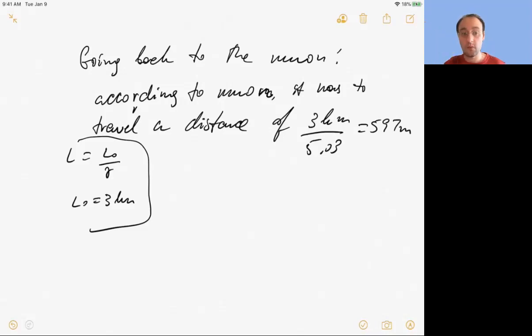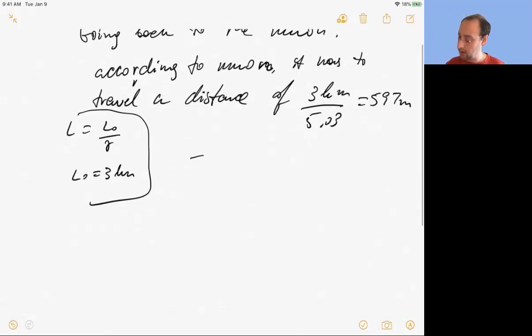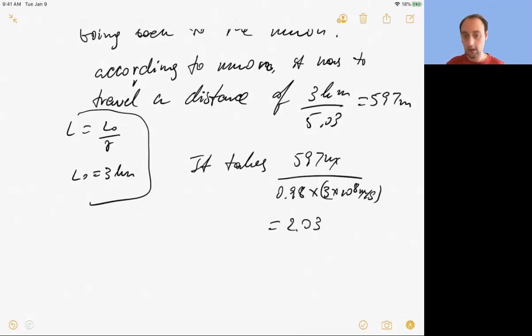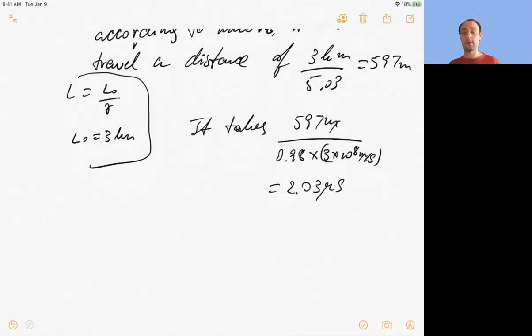Well, it's moving at 0.98 speed of light. How long does it travel? How long does it take to cover that distance? It's 597 meters divided by 0.98 times 3 times 10 to the 8 meters per second equals 2.03 microseconds, where we saw that. Enough time to survive the journey.